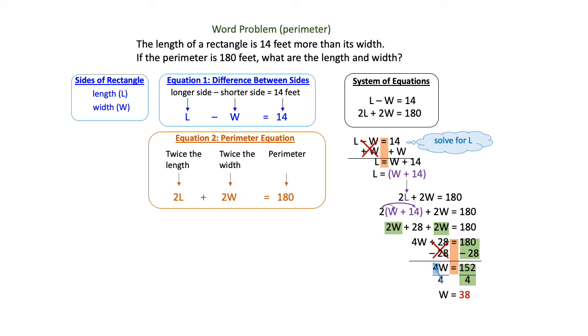I can plug in that 38 to find what the length is. So I'm going to use that first equation and plug in 38 for W. That will give me L minus 38 equals 14. To solve for L, I just need to add 38 to both sides. 14 plus 38 is 52, so that gives me L equals 52.